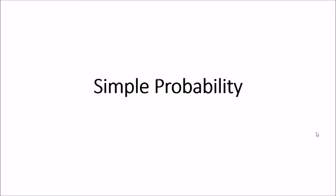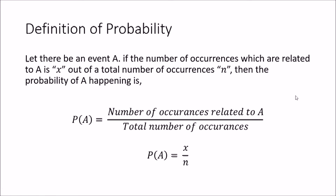Hi all, welcome to my channel Statistical Analysis. In this tutorial we are going to look at simple probability. First, we will look at the definition. Let there be an event A. If the number of occurrences related to A is X out of a total number of occurrences N, then the probability of A happening is defined as P(A) = X divided by N.